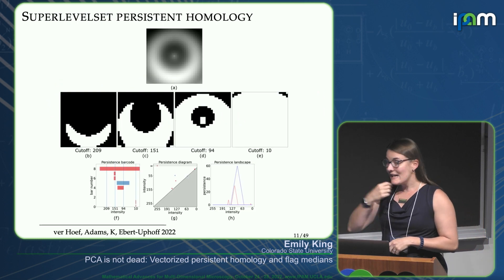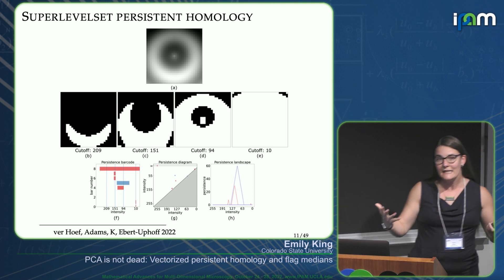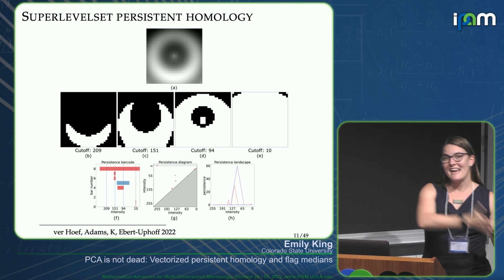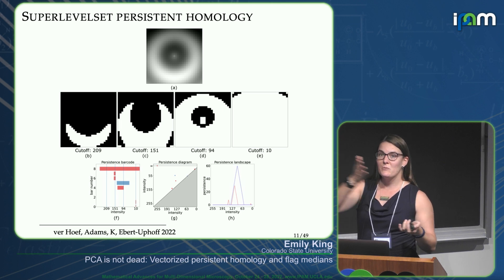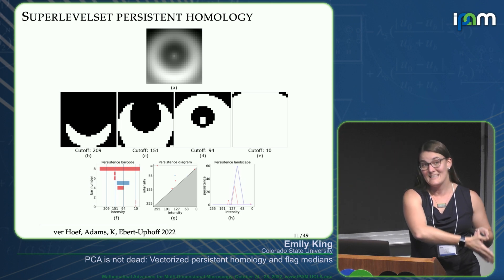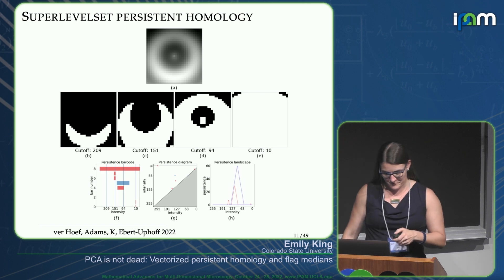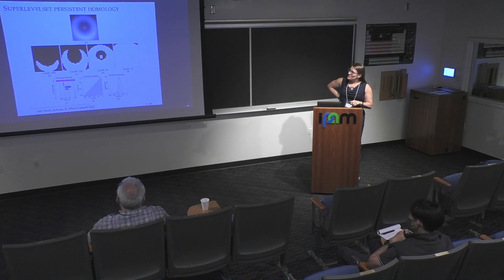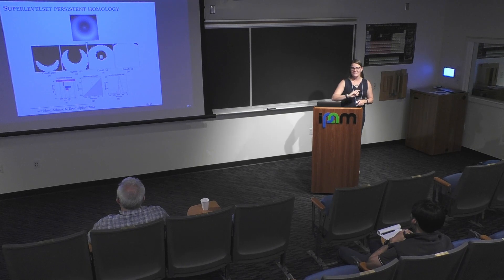We're going to compute Betti numbers over a sequence of filtered images and look at what persists in those Betti numbers over time. We'll use what's known as super-level set persistent homology — sub-level set is more standard, but for clouds the super-level set worked better. The idea is the same.